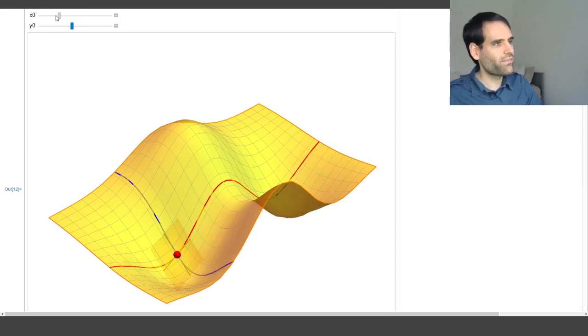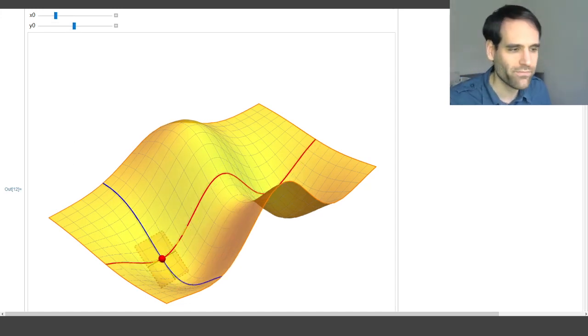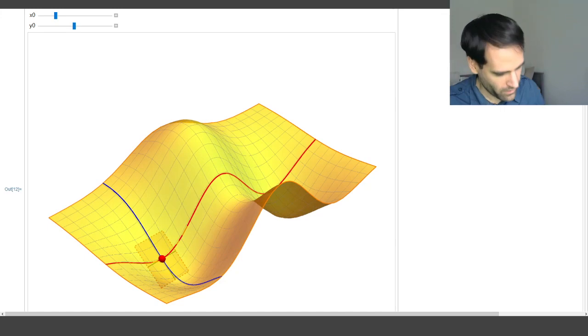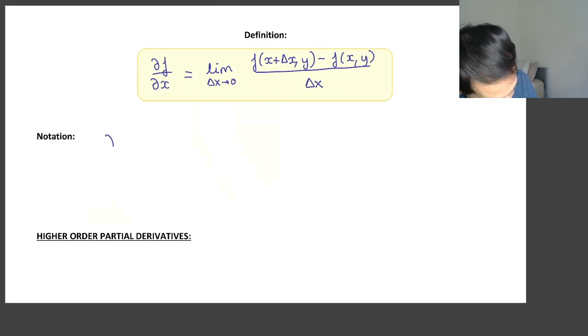So the partial of f with respect to x depends on both x and y. Therefore we could write that the partial of f with respect to x is a function of x and y, and we usually call this function f subscript x.